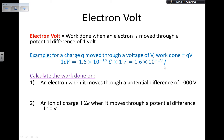Example one: calculate the work done on an electron when it moves through a potential difference of 1000 volts. The work done equals e × V, which is e × 1000, giving 1000 electron volts. To convert to joules, multiply by 1.6 × 10⁻¹⁹ to get the answer in joules.